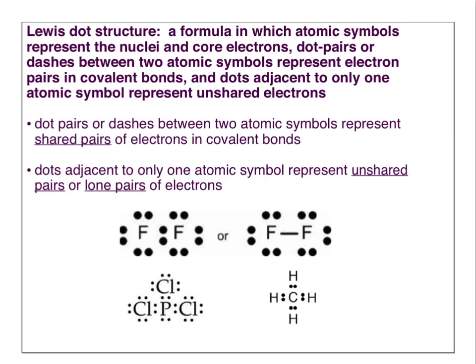You can see a few examples pictured here. We use element symbols to represent the nucleus and core electrons, and then we draw the valence electrons. They can either be shared between two atoms in a covalent bond or they can be by themselves.